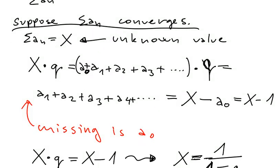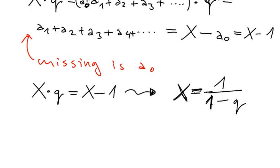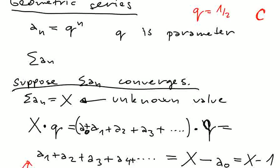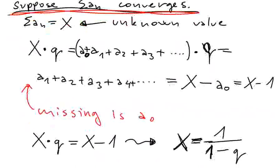If we know for which values of q the series converges, then we could use this formula and have the answer immediately. So this is quite useful, but we are not done yet. We should never forget about this condition — the series has to converge, otherwise this is completely nonsense.